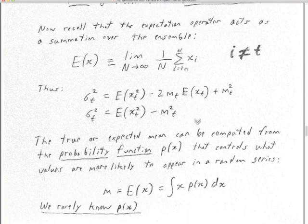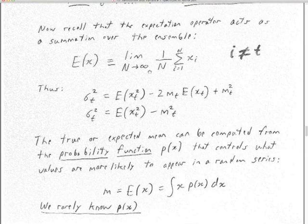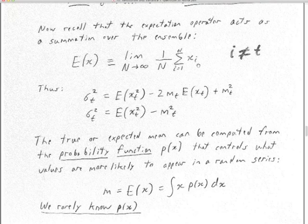We recall that the expectation operator acts as a summation over the ensemble. The expectation of some X is the limit as the number of traces in the ensemble goes to infinity of (1/N) times the sum from i=1 to N of all possible values X sub i, where i is the index to the trace in the ensemble. This is averaging over that ensemble of quintillions of different traces — quintillions of different alternative universes.